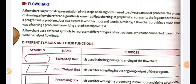A flowchart is a pictorial representation of the steps or an algorithm used to solve a particular problem. Just as a picture is worth a thousand words, a flowchart provides a much better way of solving a problem than writing a lot of descriptive text. In an algorithm we write steps to solve a problem, but in a flowchart we make figures to explain our working. A flowchart uses different symbols to represent different types of instructions, connected to each other with the help of flow lines.